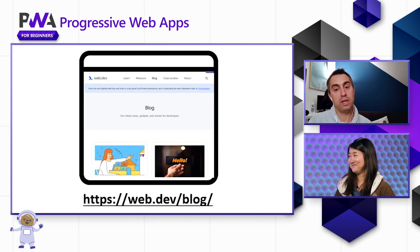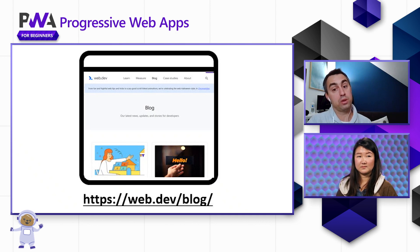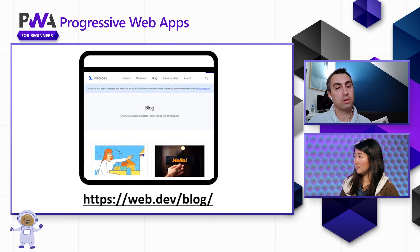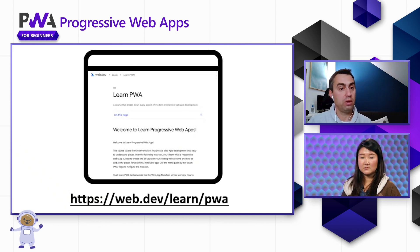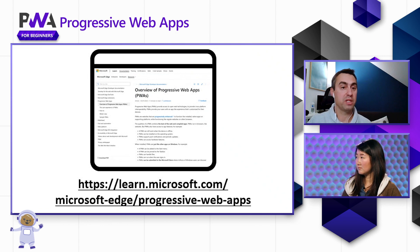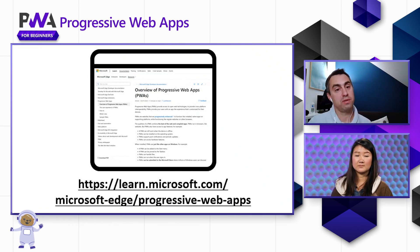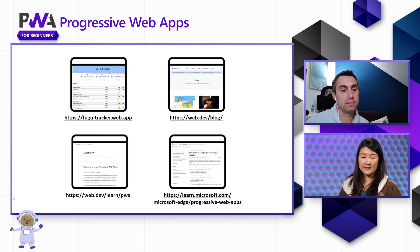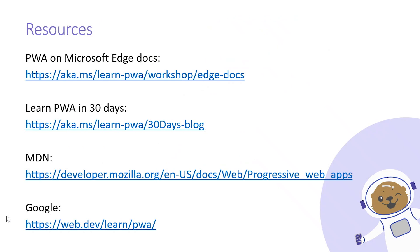Web.dev is also an amazing place to find out about new features. If you go to web.dev/blog you'll see new articles about new capabilities that might be interesting to you. They also have a really good learning section at web.dev/learn/PWA. And we also at Microsoft have great documentation at learn.microsoft.com/microsoft-edge/progressive-web-apps. Thank you again, Patrick, for today's session where we talked about advanced capabilities and native integrations. In the next video we're going to show you some real-world examples and inspire you to build your own Progressive Web Apps.